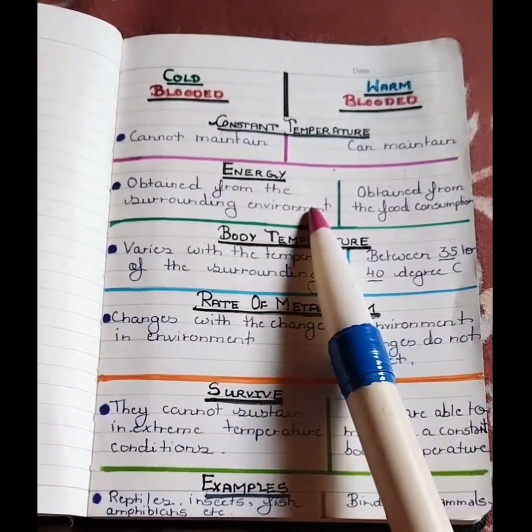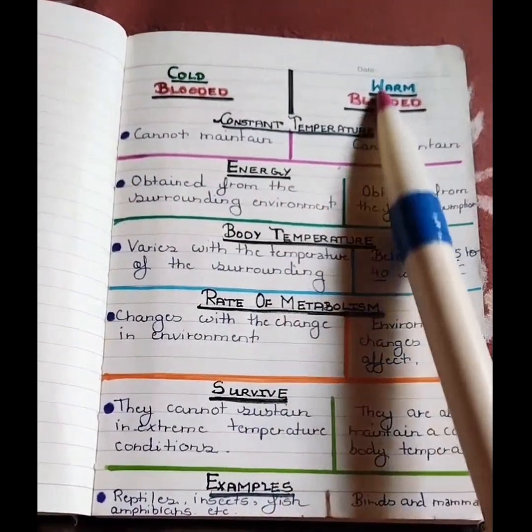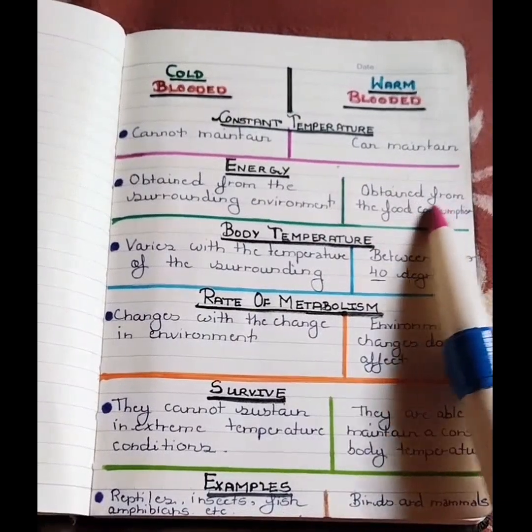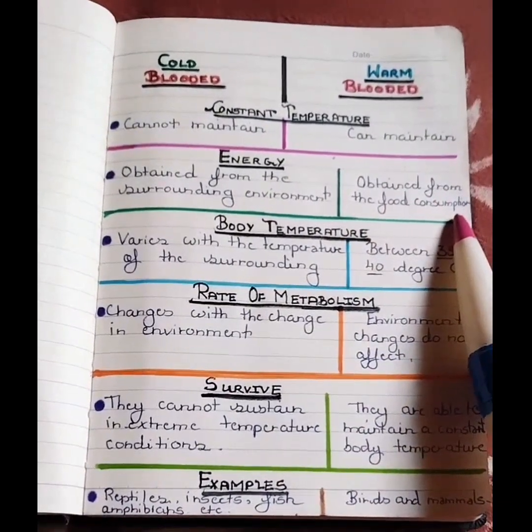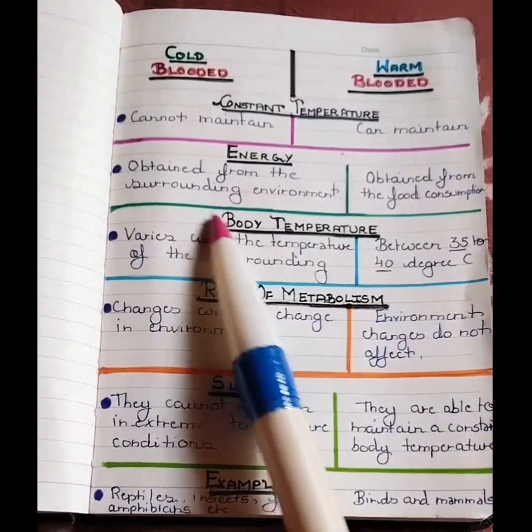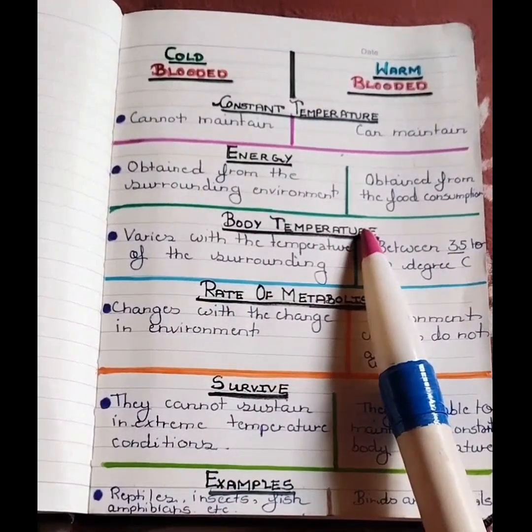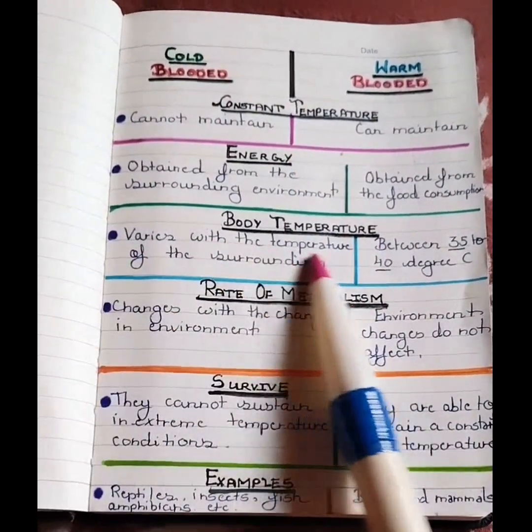The third point is body temperature. Cold-blooded varies with the temperature of the surrounding, whereas warm-blooded maintain body temperature between 35 to 40 degrees Celsius.